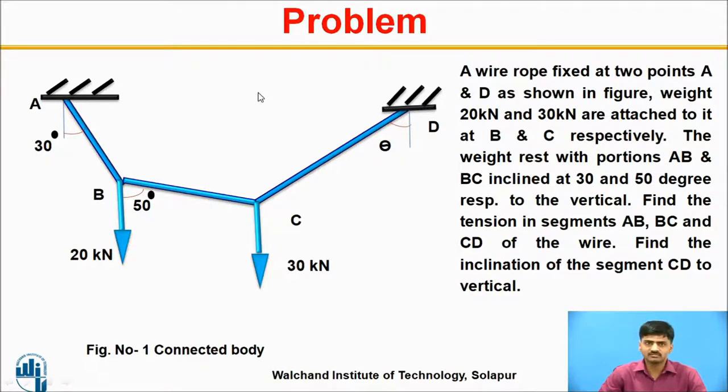Let us discuss one problem. Wire rope fixed at two points A and D as shown in the figure. Weights 20 kilonewton and 30 kilonewton are attached at joints B and C respectively. Portions AB and BC are inclined at 30 degrees and 50 degrees with respect to horizontal. Find the tension present in segments AB, BC, and CD, and also find the inclination of segment CD.